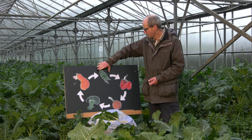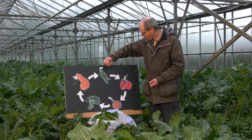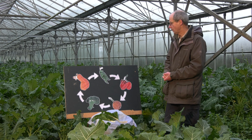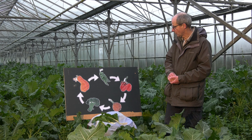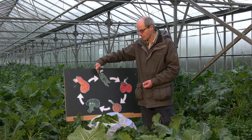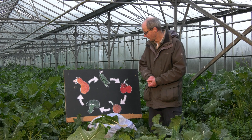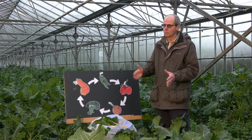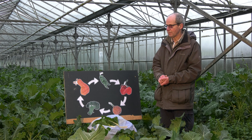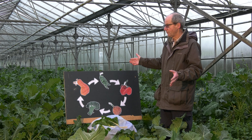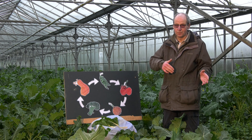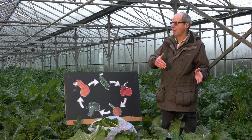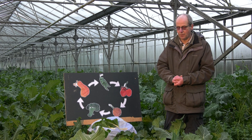We have a few gaps in this part of our rotation, so we might put some roots into those gaps, or have roots as a sixth part of the rotation. One of the things that governs your rotation is how much space you've got and how many units you want within that space. We've got a glasshouse, and we fill it with brassicas, or tomatoes, and we use that as our unit.